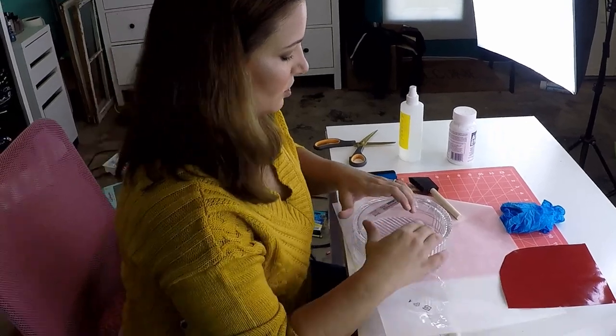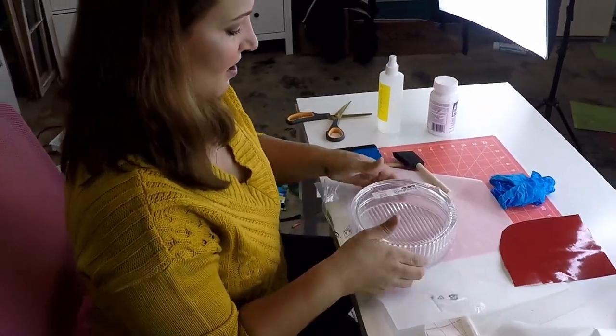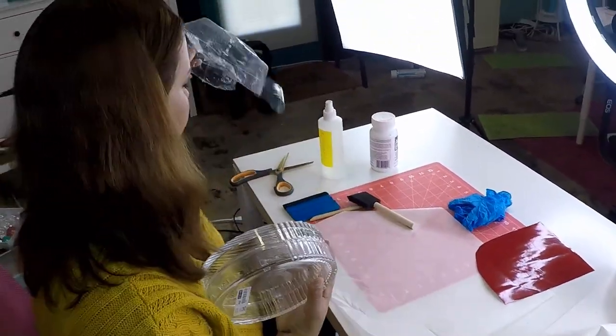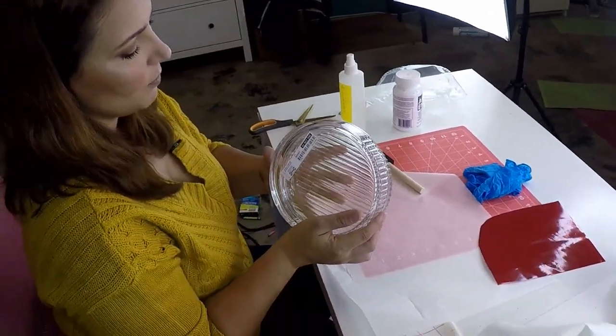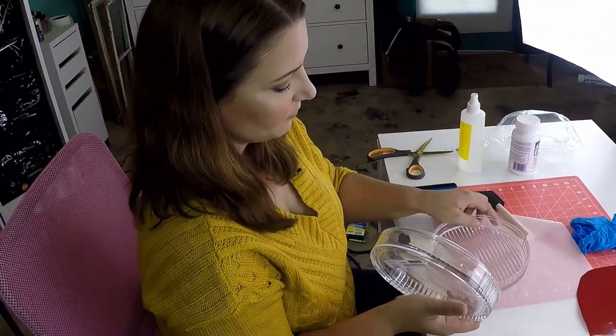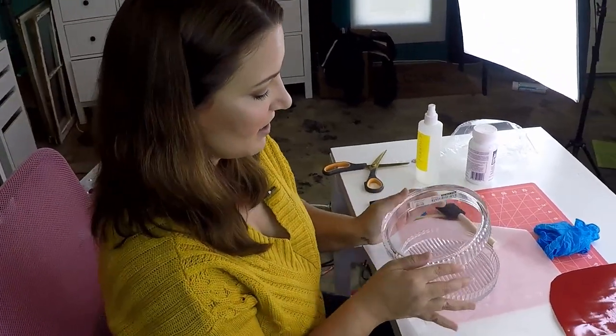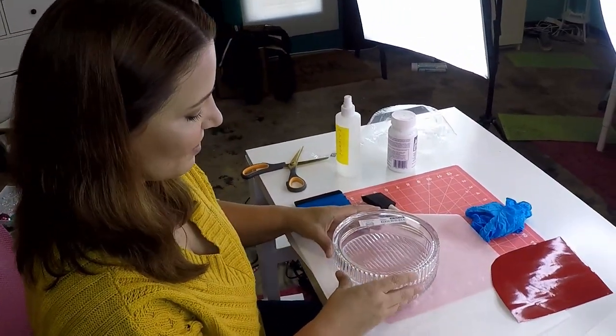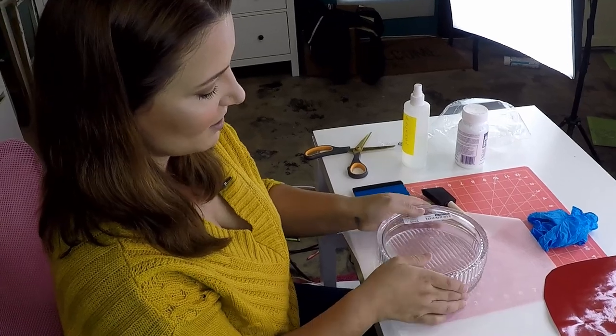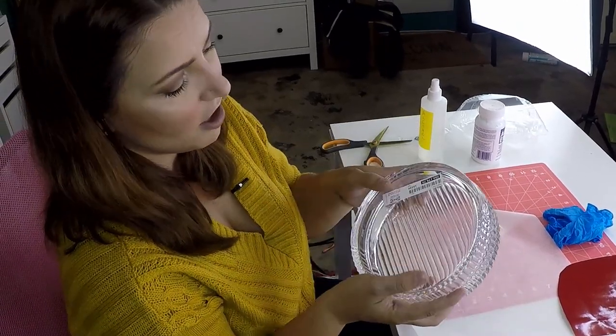So the first thing I'm going to do is take and open up the glass container and you can really use it either way to set this out but I want to etch the top so we are going to use it with the ribbed side on bottom.